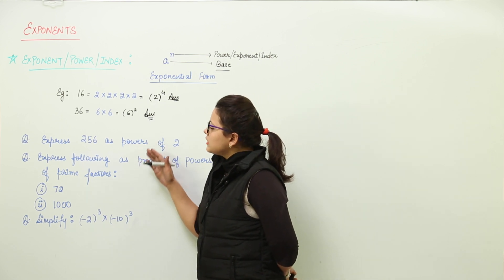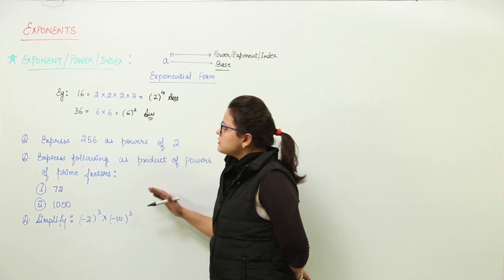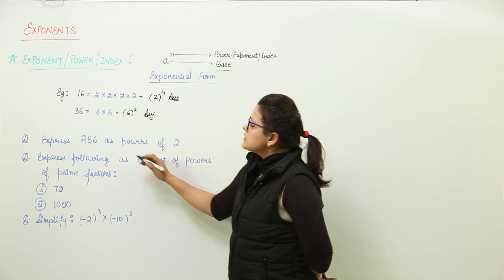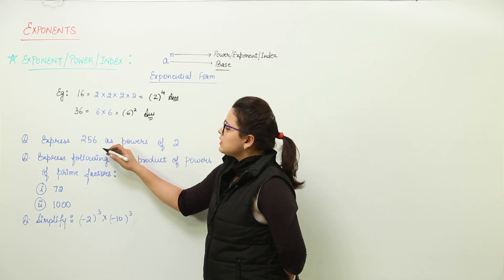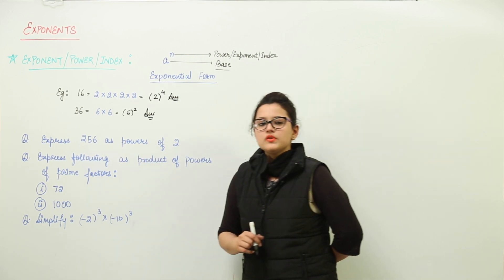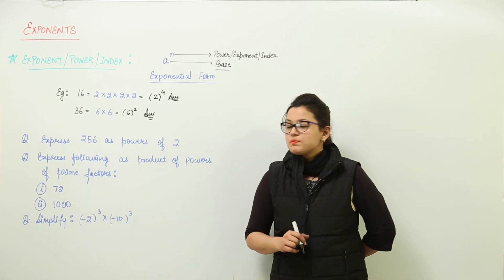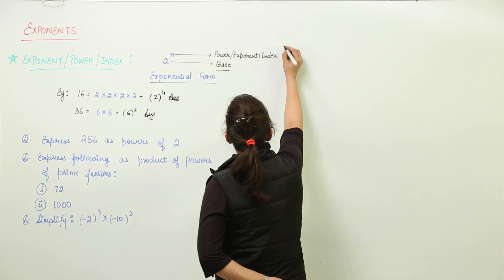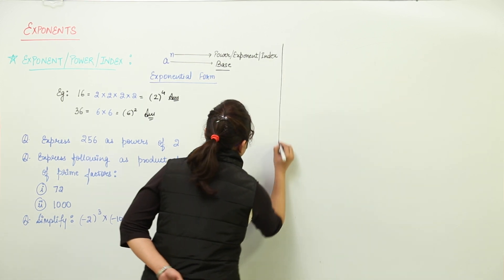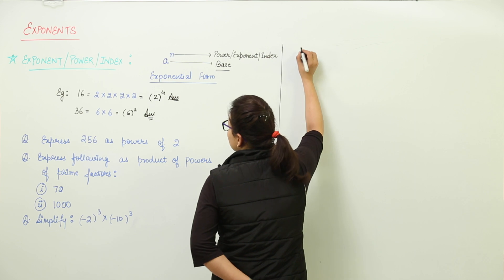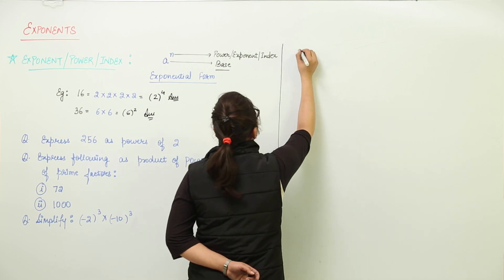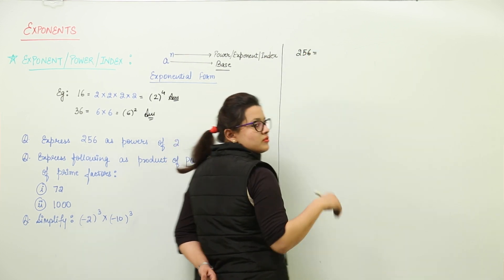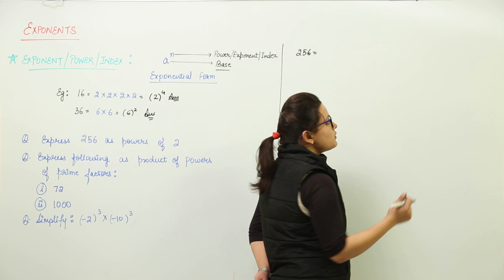Now we are going to solve questions based on this concept. The first question says: express 256 as powers of 2. To do that, we first find the factors of 2 so that 256 can be written in terms of factors of 2.